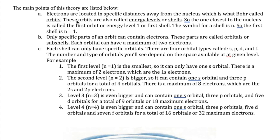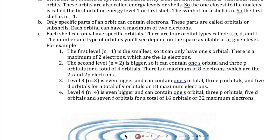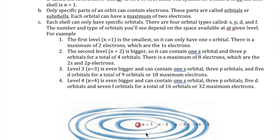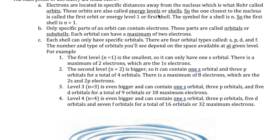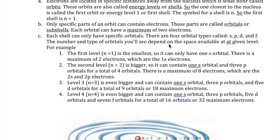The first characteristic is that electrons can be found only in specific locations or levels around the nucleus. These are what Bohr called orbits, also called energy levels or shells. The one closest to the nucleus is called the first orbit, the first energy level, or the first shell. The symbol for a shell is n, so the first shell is n equals 1.